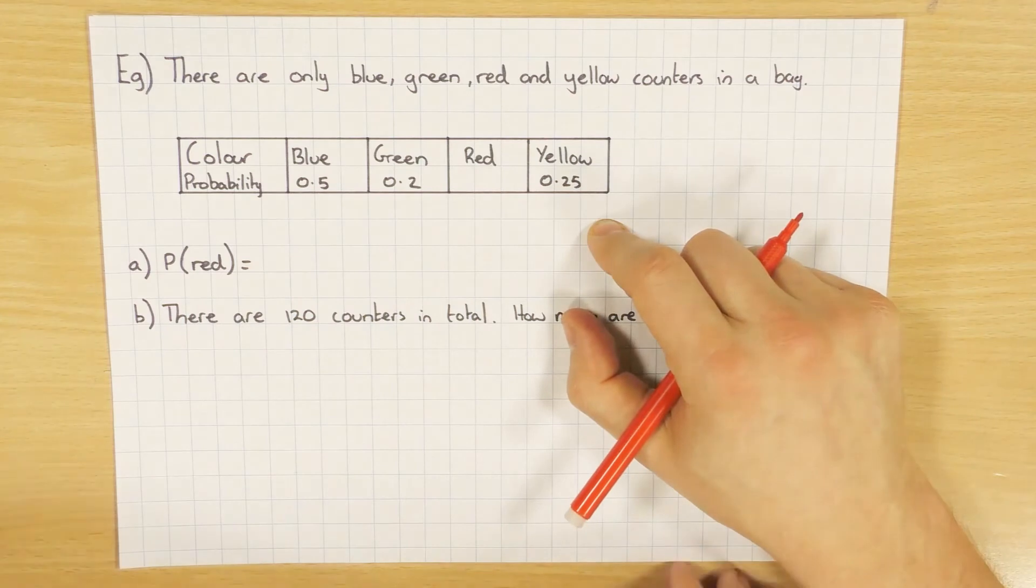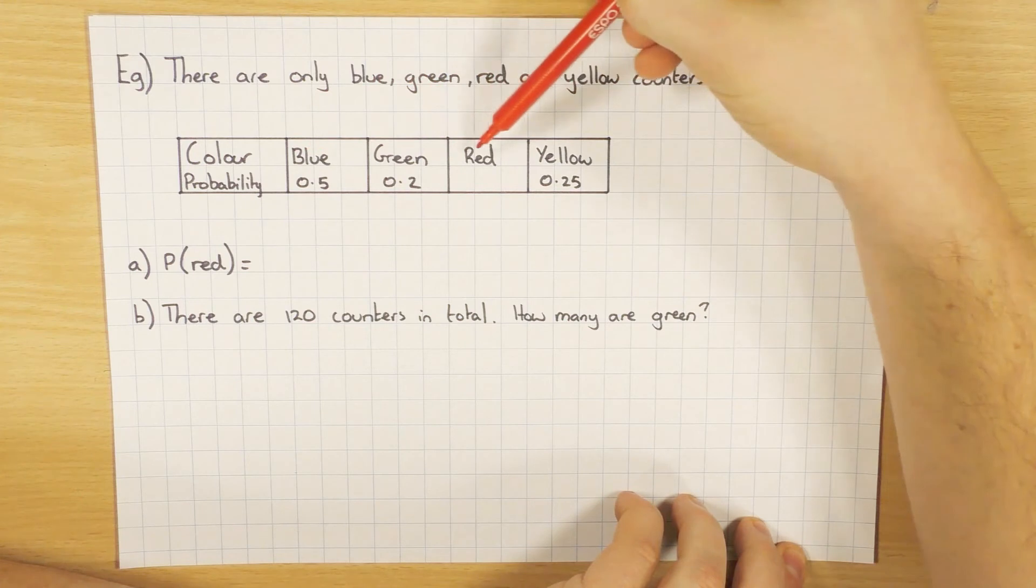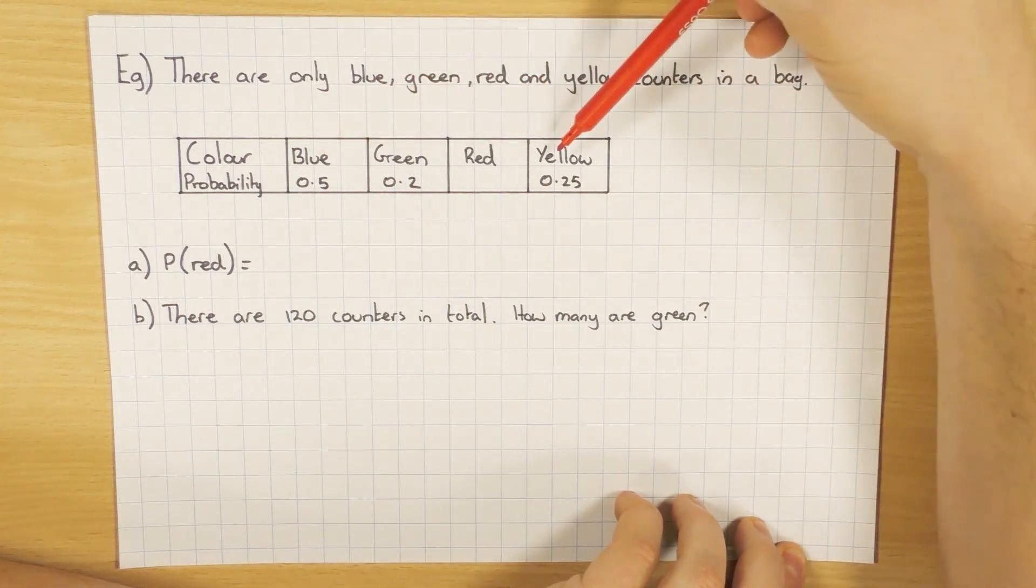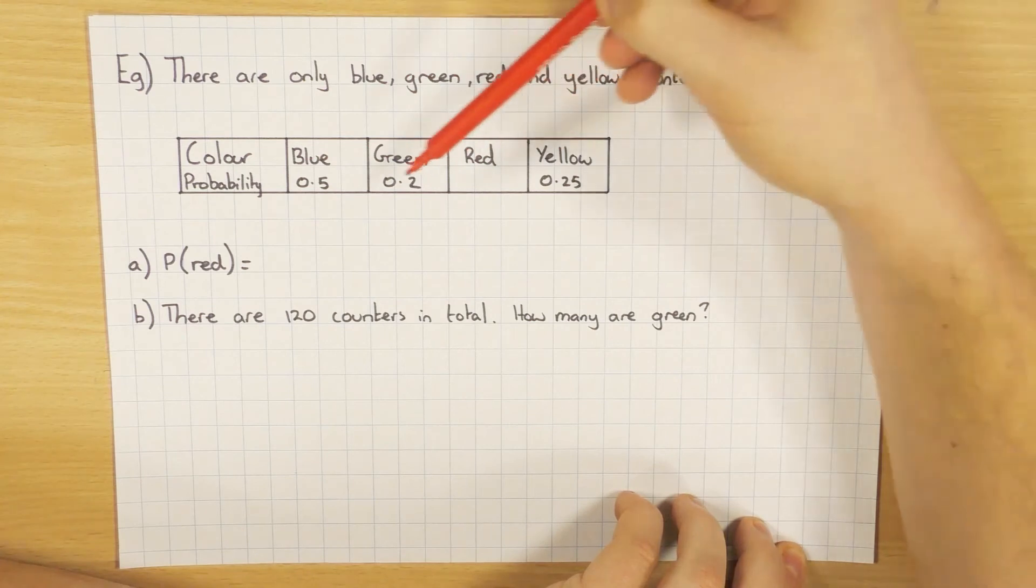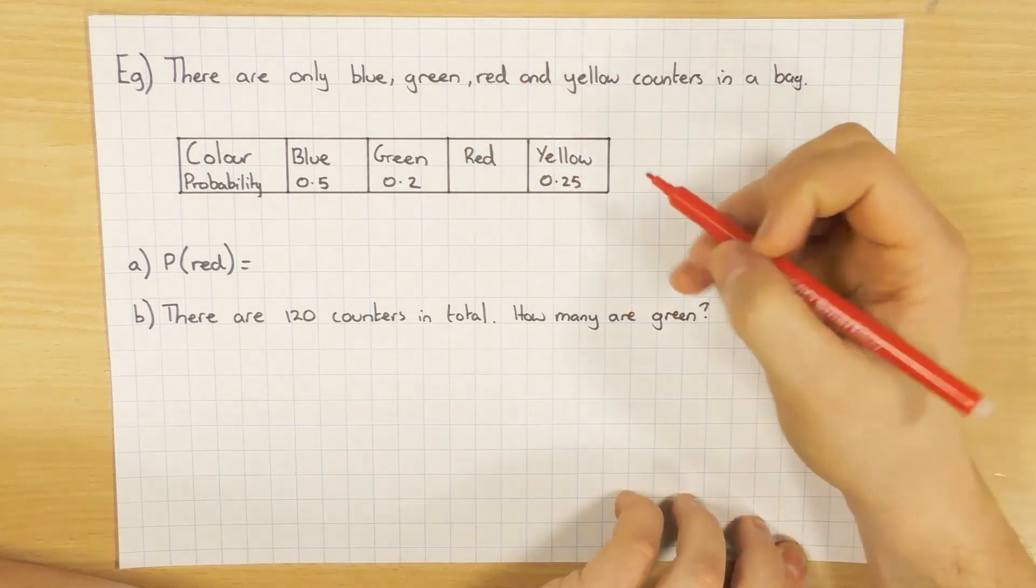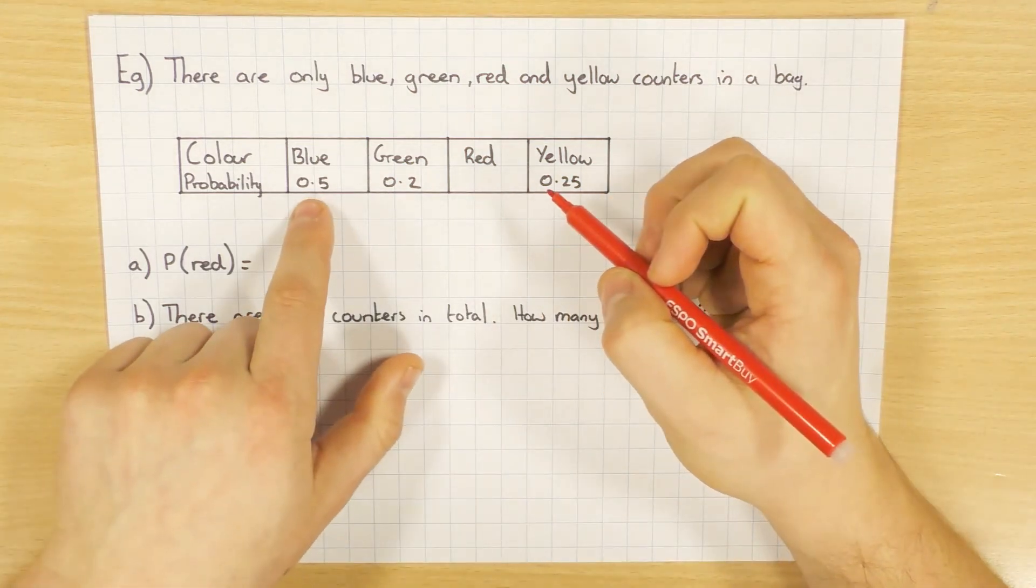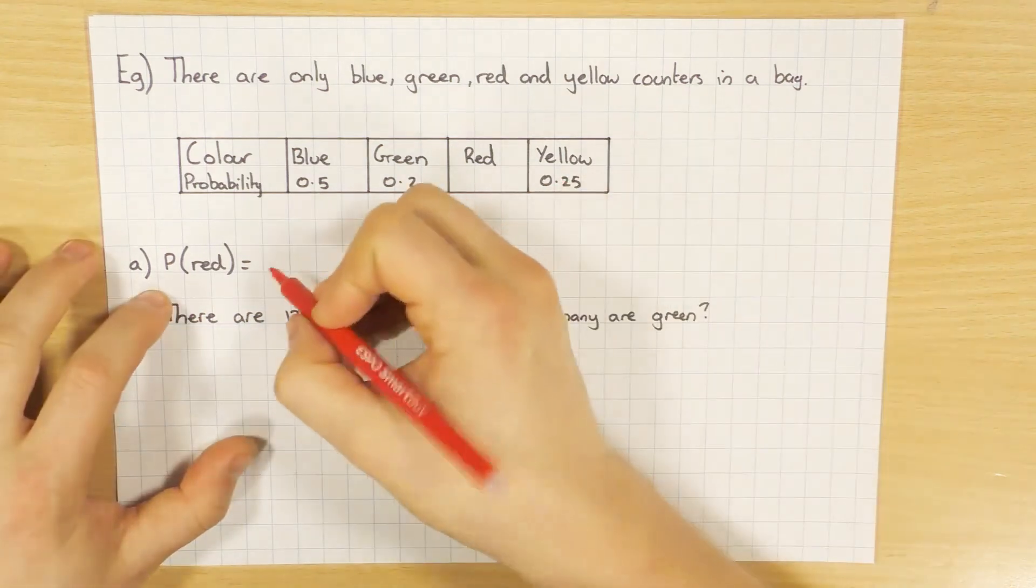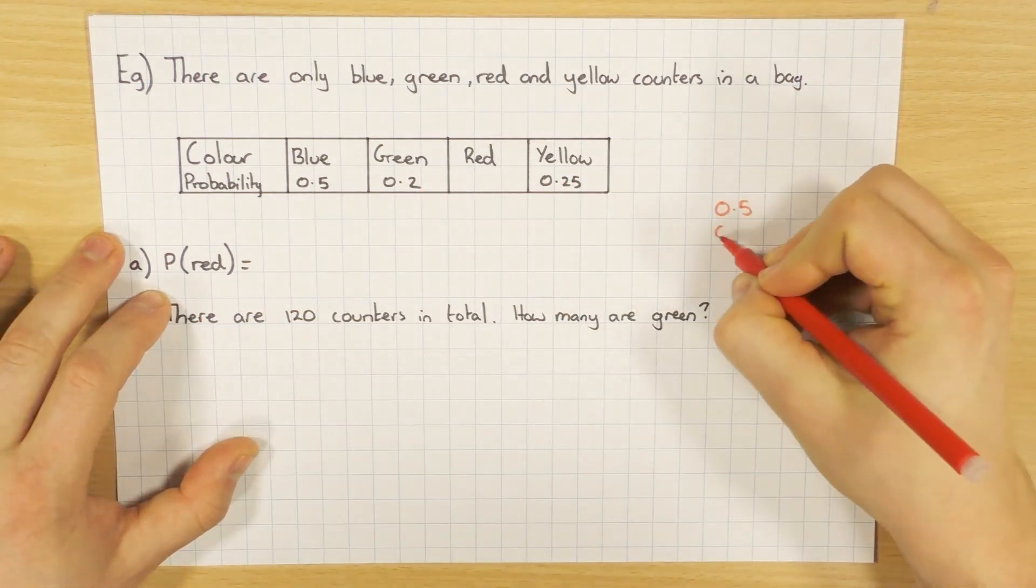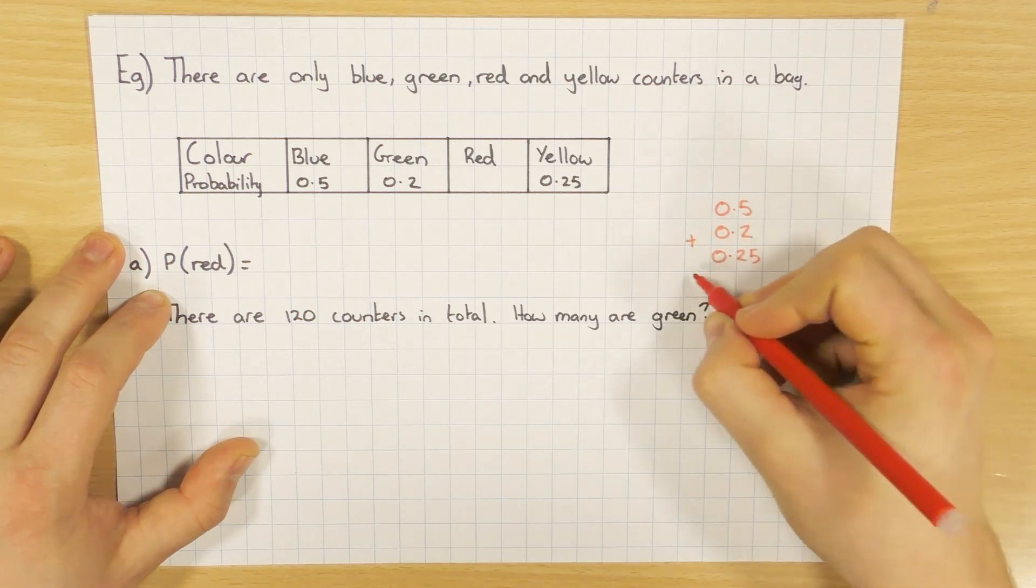And in this particular question, they want us to work out the missing probability of red. So the other rule that you need to be aware of is that if you know all the possibilities, and in this case we do - we've got blue, green, red, and yellow - the probability will add up to one. In which case, that's the fact we're going to use to help us find out what red is. So the first thing I'm going to do is add up the ones I do know. So 0.5, 0.2, and 0.25. So I'm going to add these all up.